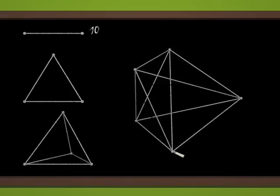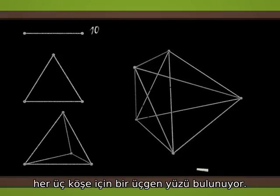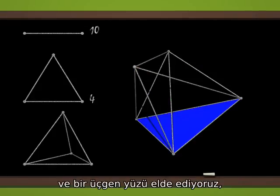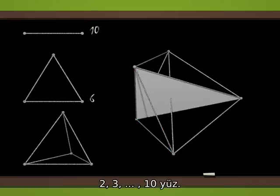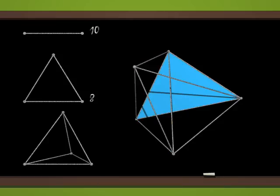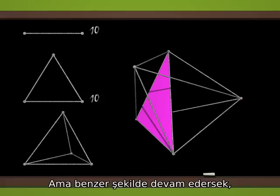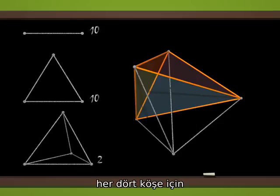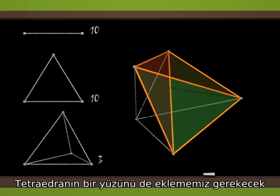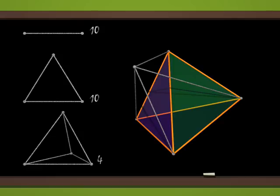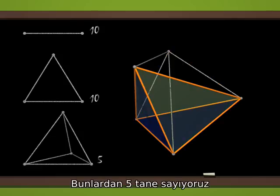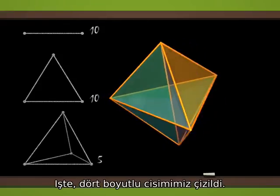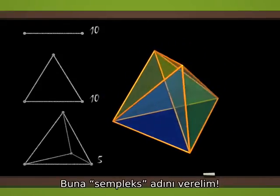In the tetrahedron, there is a triangular face for each triple of vertices. We proceed in the same way, which gives us ten faces. But if we keep going by analogy, we have to add a tetrahedral face for each four-tuple of vertices. There are five of them. That's it. We constructed our four-dimensional object. We'll call this the simplex.